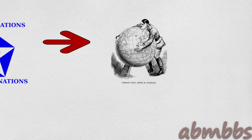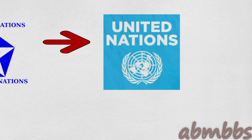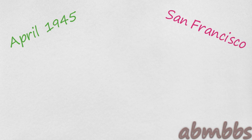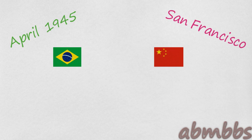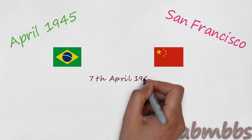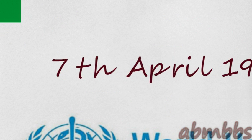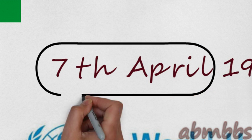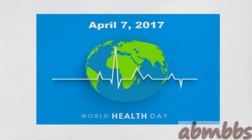Then there was the Second World War, following which the United Nations was set up. The WHO was one of the many parts of the United Nations. So in April 1945, a conference was held in San Francisco, in which Brazil and China proposed that an international health organization should be established. On 7th April 1948, the WHO formally came into existence, and this day is celebrated as World Health Day. A World Health Day theme is chosen every year to focus attention on a specific aspect of public health for that year.